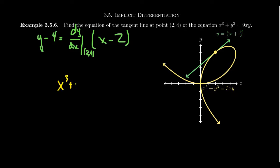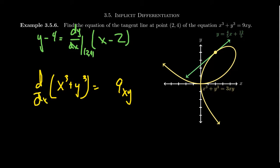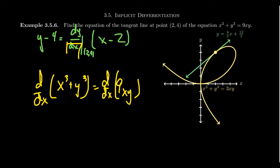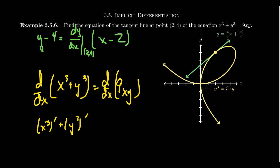To compute the derivative, we're going to do this implicitly. We take the equation x cubed plus y cubed equals 9xy and take the derivative of both sides with respect to x. We need the slope of the tangent to look like dy over dx — an infinitesimal rise over an infinitesimal run. Applying the derivative operator d/dx to both sides: on the left, we take the derivative of x cubed plus the derivative of y cubed. On the right, we factor out the 9 to get 9 times (xy)′.